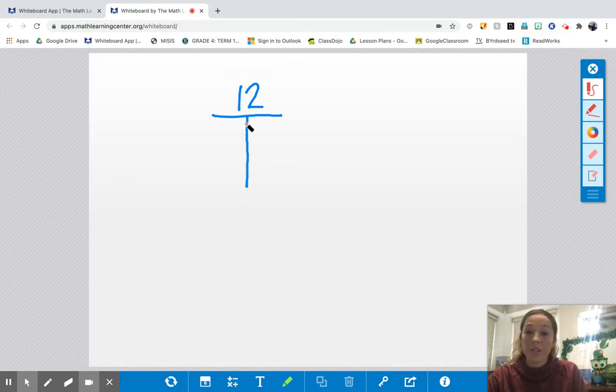So a really cool strategy is to just go by your numbers in order. So always start with 1 because 1 works with every single number. So 1 times 12 makes 12. And then I just try numbers in order. So I'm going to try 2. Does 2 times anything make 12? Well, yes. 2 times 6 makes 12. Then I'm going to try 3. 3 times 4 makes 12.